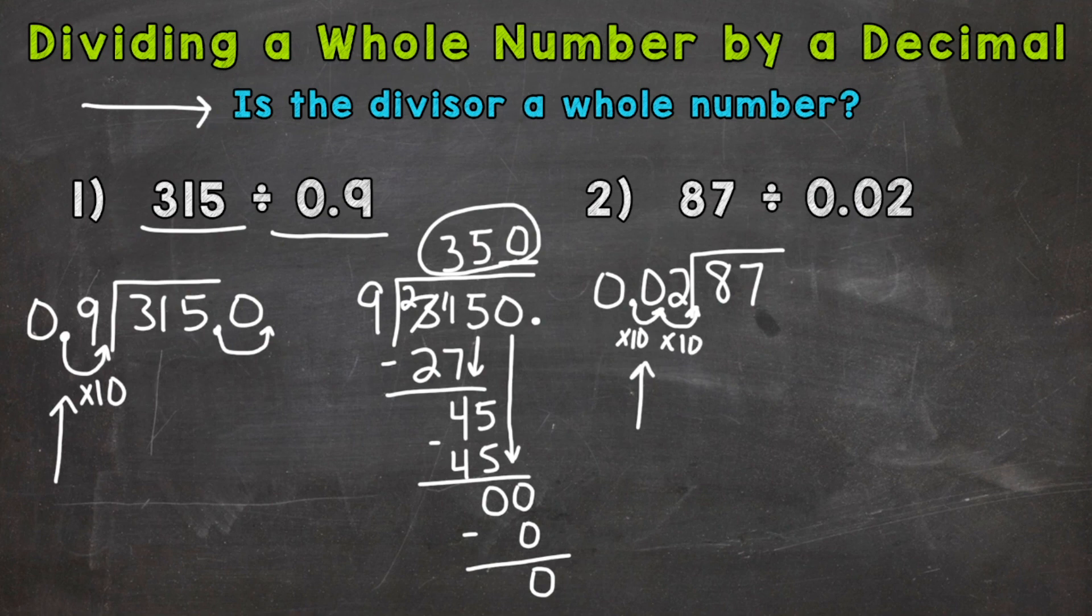So we need to multiply 87 by 100 or move the decimal twice to the right in order to push the 8 and 7 to the correct place values. So 1, 2. Remember, the decimal comes at the end of a whole number. So I moved it twice to the right, and we get 8,700.